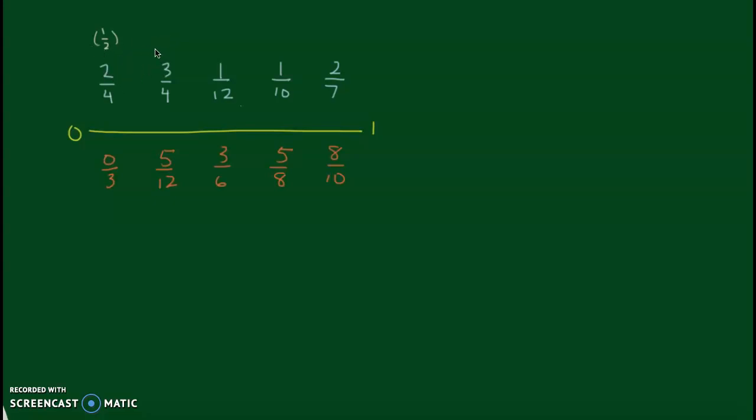3 fourths is bigger than 2 fourths. So let's go out to 1 twelfth. 1 twelfth is close to 0. So if 1 twelfth is close to 0 and both of these are half or bigger, then this top part can't work. It cannot work. So let's come down here and see if these are correct.